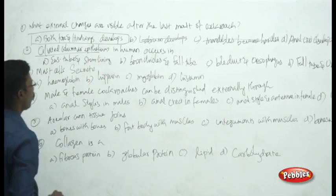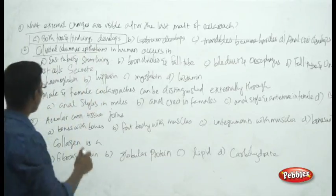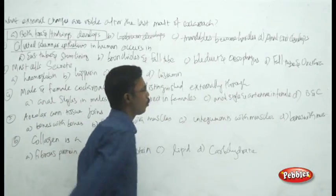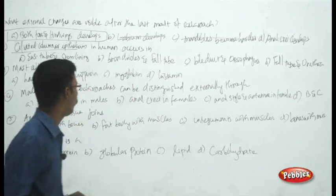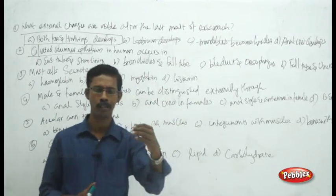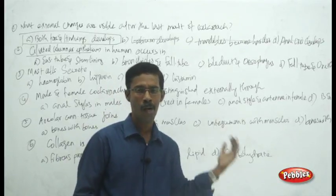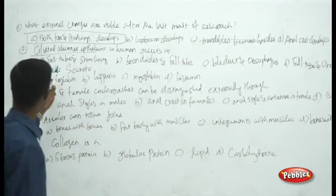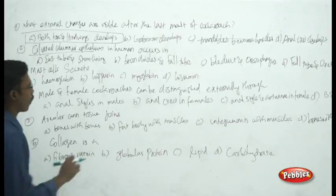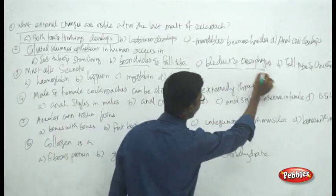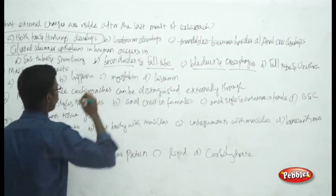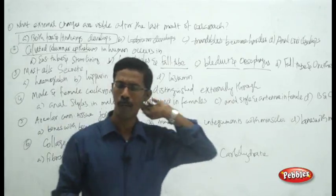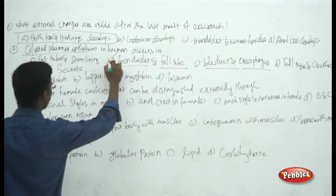Next question: where does ciliated columnar epithelium in humans occur? Choices are Eustachian tube, stomach lining, bronchioles and fallopian tube, bile duct and esophagus, and fallopian tube and urethra. Ciliated columnar epithelium has cilia on the surface that move particles. The correct answer is bronchioles and fallopian tube — in bronchioles they move mucus, and in the fallopian tube they move particles.